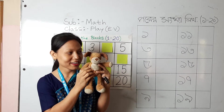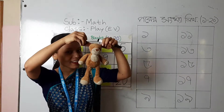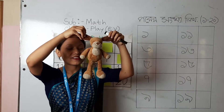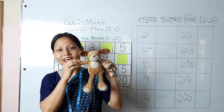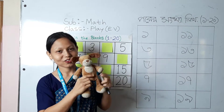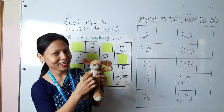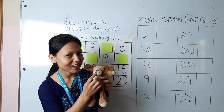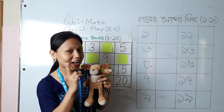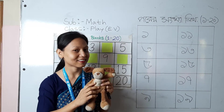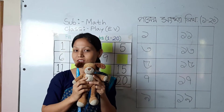This is a teddy bear. Can you see? One belly, two ears, two hands, two legs, one belly, one mouth, one nose, two eyes. Do you like to do that song?